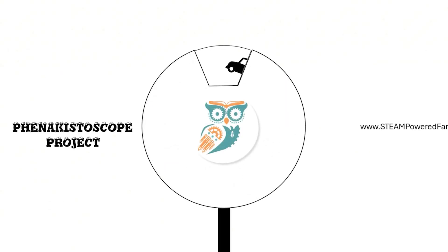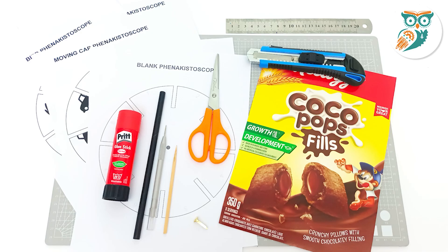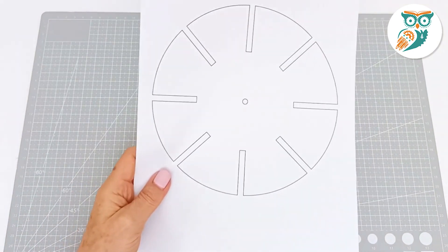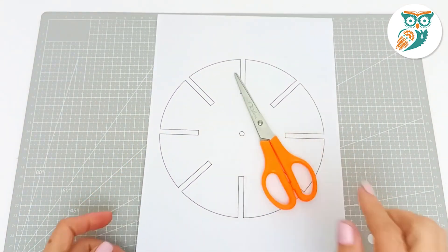This is a really easy project and you can grab the templates on the STEAM Powered Family website, and the link is down in the description. You're also going to need a cardboard cereal box for this experiment.